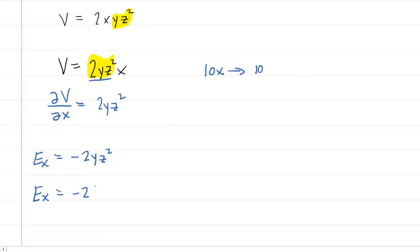So we'll have negative 2 multiplied by negative 2 multiplied by 4 squared. So now we have positive 4 multiplied by positive 16, so we're going to end up with 64 newtons per coulomb. So let's hang on to this value. We're going to need it along with the other components.